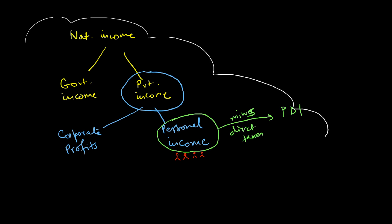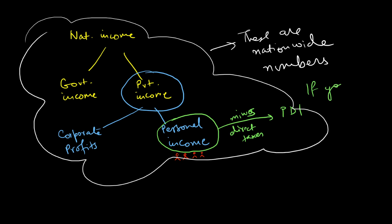Now, all of these values are nationwide numbers. National product, national income, private income, personal income, all of these are nationwide numbers. If you divide them by the population of the nation, you arrive at per capita figures. And, for example, the per capita income or the per capita GDP, which is often used in a lot of economic discussions and debates.